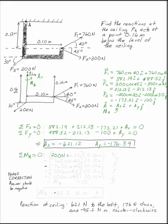But the x component, which would be 200 cosine 30 or 173.21, that will create a moment because its perpendicular distance is 0.16 meters. That will create a moment that tends to turn this way.